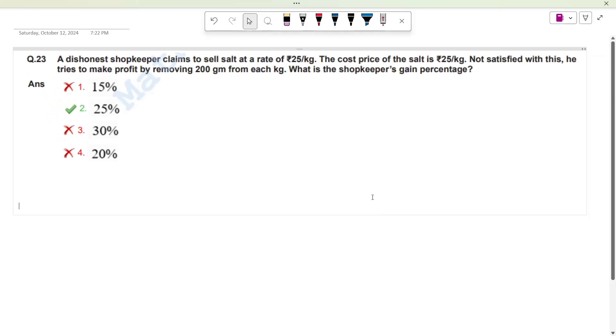I will solve the previous question of CGL 2024. In this case, a dishonest shopkeeper claims to sell salt at a rate of 25 rupees per kg. He says that he is selling at 25 rupees per kg. The cost price of the salt is also 25 rupees per kg.